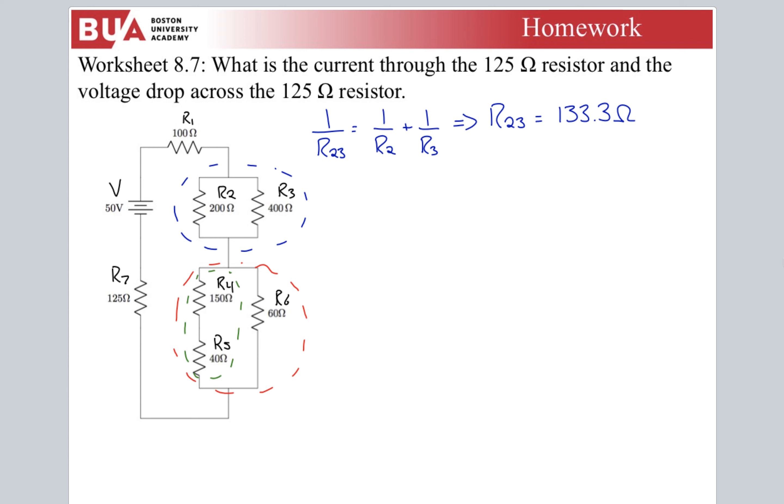R45 is equal to just R4 plus R5 which is 190 ohms. Now I do one over R456 is equal to one over R45 plus one over R6. 190 over 160, add those, flip them, and that gives me R456 is equal to 45.7 ohms. Let's redraw our circuit now.